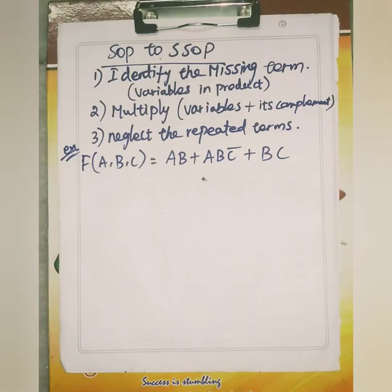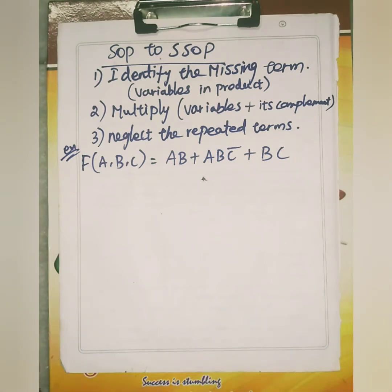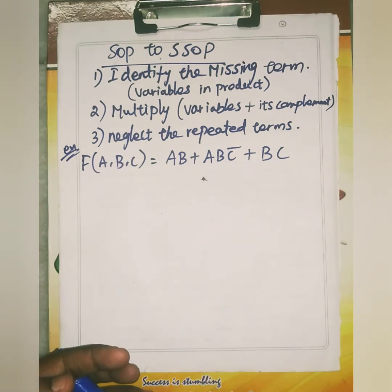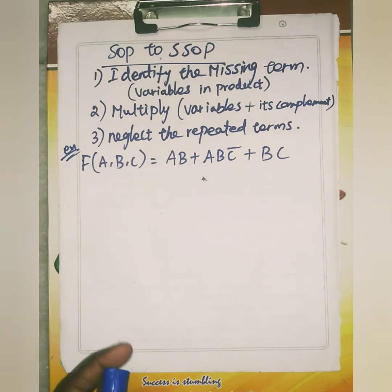This exercise is for converting the sum of products expression to standard sum of products (SSOP) form. Up to these exercises you have seen standard SOP to minimal form; here you are going to see minimal to standard form. We have three rules: first, identify the missing variables in the given expression; second, multiply by that variable plus its complement; third, neglect the repeated terms.